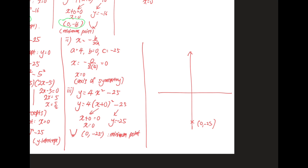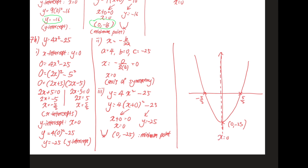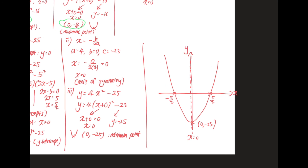Now we sketch the graph. The minimum point is (0, minus 25). The x-intercepts are minus five over two and five over two. The y-intercept is minus 25, which is also the minimum point. The axis of symmetry is x equal to zero, the vertical line here. Label y, x, and zero. We have now completed everything in question 7.